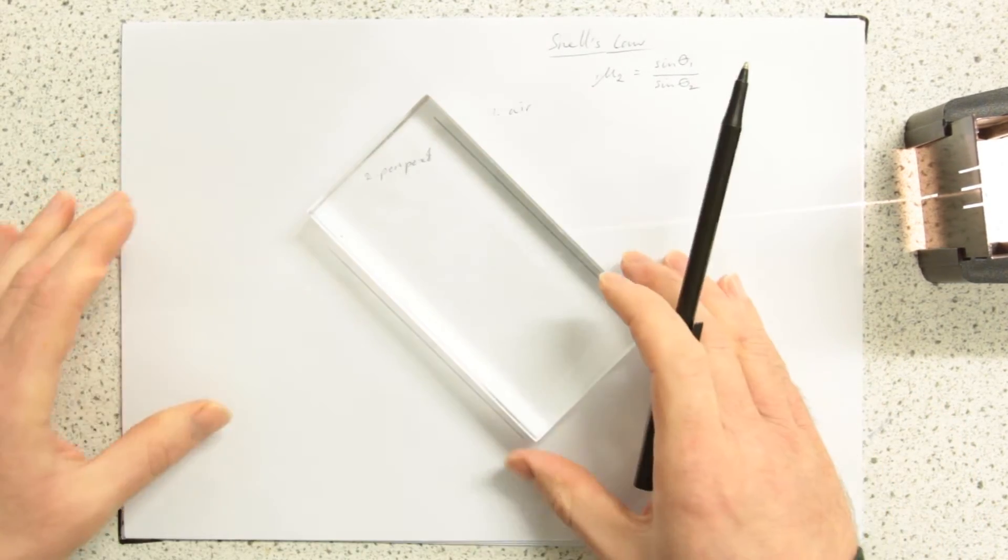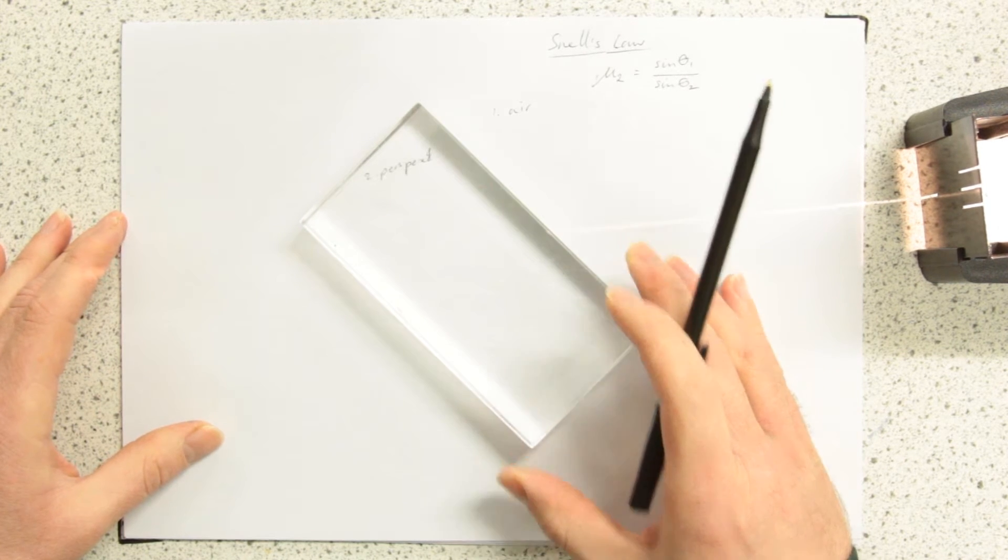I've placed my block on and I'm going to turn out the light so you can see what happens. So you can see that refraction has happened at this boundary and then has also happened at this boundary as well.